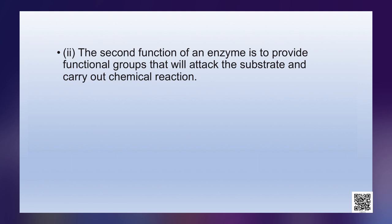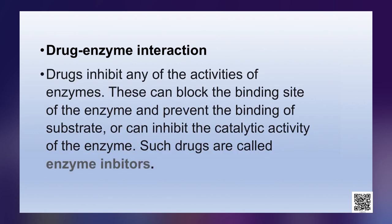The second function of an enzyme is to provide functional groups that will attack the substrate and carry out chemical reaction. Now we will discuss drug-enzyme interaction. Drugs inhibit either of these activities — that is, to hold the substrate or to provide the functional group. They can block the binding site of the enzyme and prevent binding of the substrate, or can inhibit the catalytic activity of the enzyme. Such drugs are called enzyme inhibitors.